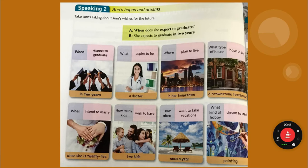Where does she plan to live? She plans to live in her hometown. What type of house does she hope to buy? She hopes to buy a brownstone townhouse. As you can see in the picture, the house is made out of brownstone, hence their name. They're actually townhomes, which means different units all the way up and down the street that are attached. The buildings are attached to each other and are usually two or three stories high — narrow, but they go up. It's like having a two-story apartment, and they're usually very expensive.